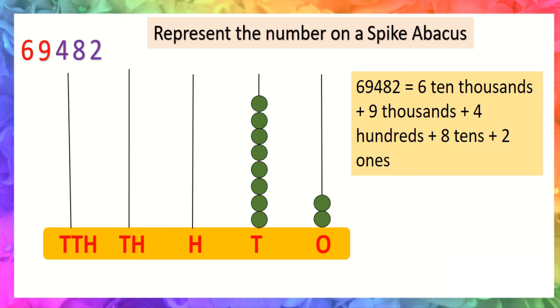So we will draw four beads: one, two, three, four. At thousands place the digit is nine.